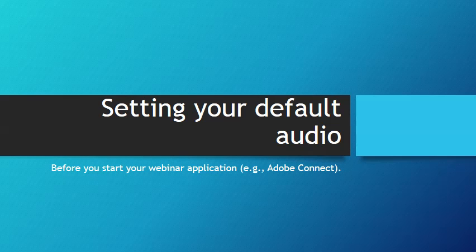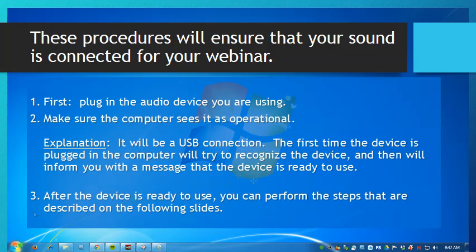This demonstration will show you how to set your headphone and microphone, or speakers and microphone, as the default devices on your computer so that you can be assured that they will work during the webinar session. These procedures will ensure that your sound is connected to your webinar.